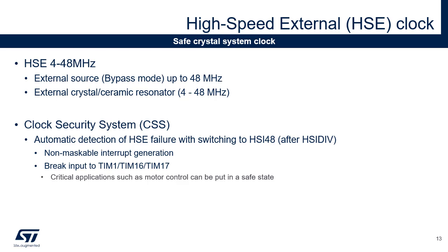The high-speed external oscillator provides a safe crystal system clock. The HSE supports a 4 to 48 MHz external crystal or ceramic resonator and also an external source in bypass mode. A clock security system allows automatic detection of HSE failure. In this case, a non-maskable interrupt is generated and a brake input can be sent to timers to put critical applications, such as motor control, in a safe state. When an HSE failure is detected, the system clock is automatically switched to an internal oscillator, the HSI48, so the application software doesn't stop in case of crystal failure.